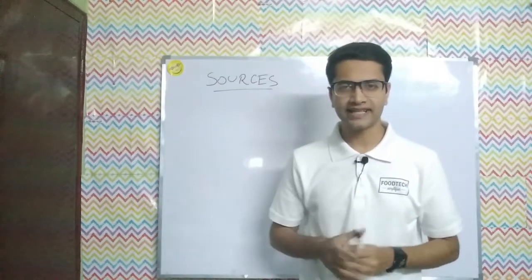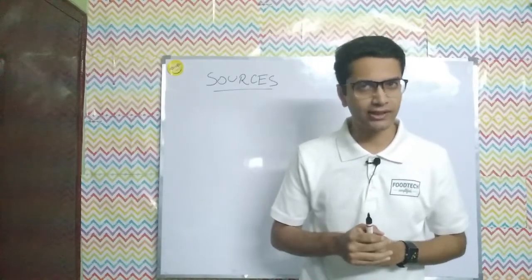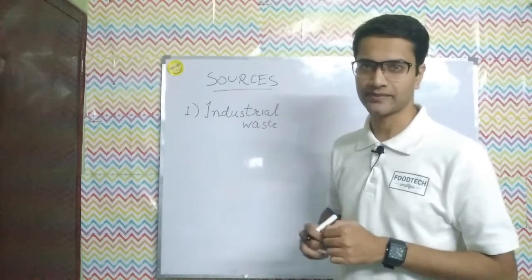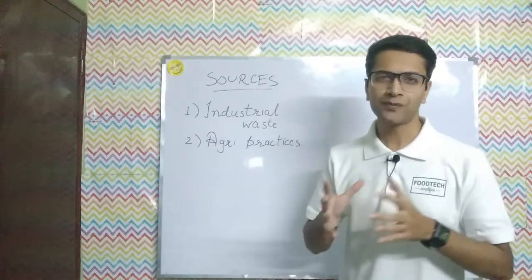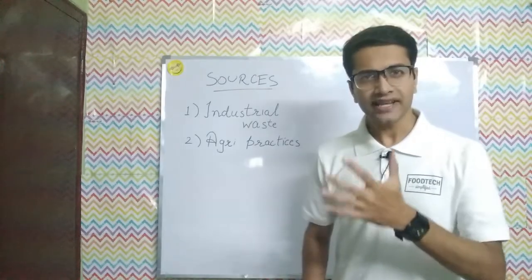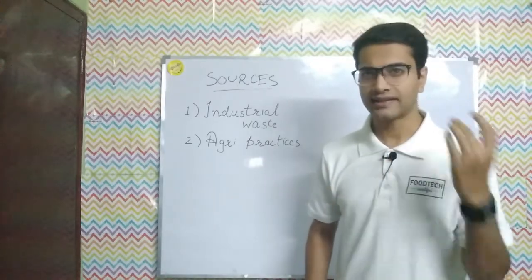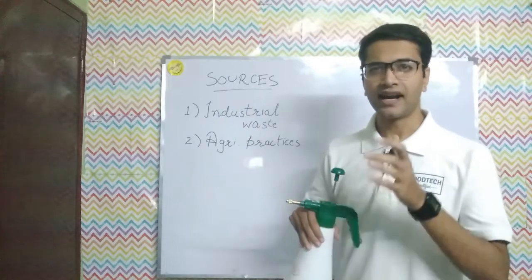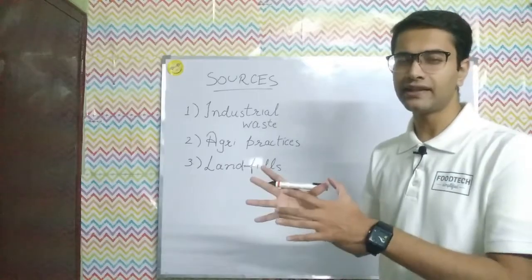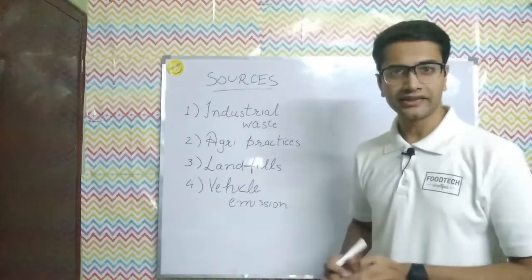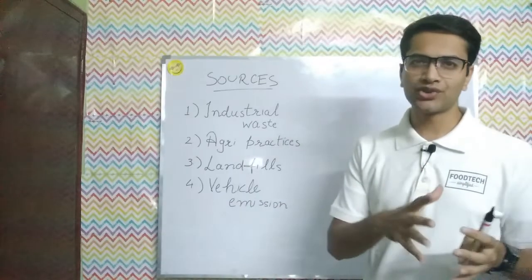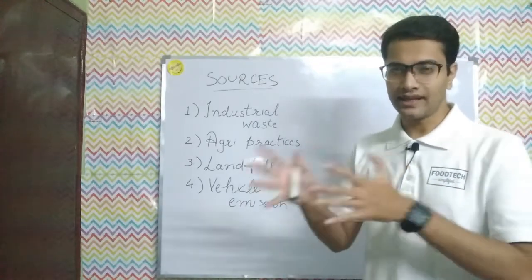Moving on to phase two: the sources of the chemical hazards in the food. Number one is waste material and discharge from industries. The second is the use of poor agricultural practices, such as excessive use of fertilizers and pesticides. The third source is landfills near crops or farms. And the fourth source is vehicle emissions and pollution that enters into the food.